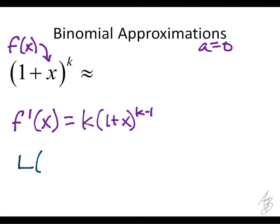I'm going to write this equation. The first thing is f(a). What is f(a)? Let's write it out. It's (1+a)^k, and a is 0, so it's 1^k. That's 1 to some number, which is 1.